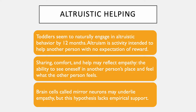Just joking — the theory of mirror neurons is debatable as it lacks any direct empirical support. Toddlers seem to naturally engage in altruistic behavior by 12 months. Altruism is an activity intended to help another person with no expectation of reward. Sharing comfort and help may reflect empathy, the ability to see one's self in another person's place and feel what the other person feels. Brain cells called mirror neurons may underlie empathy, but this hypothesis lacks empirical support.